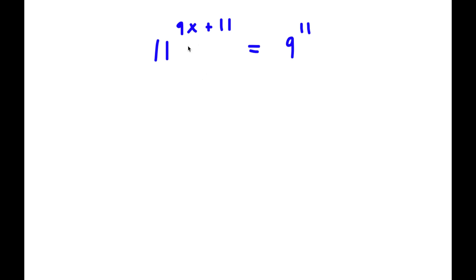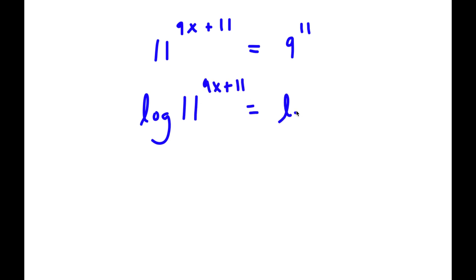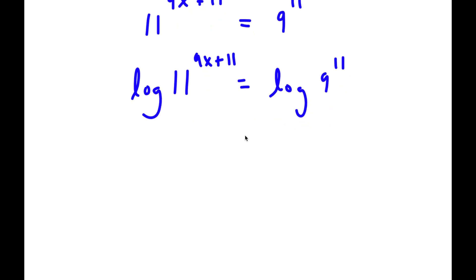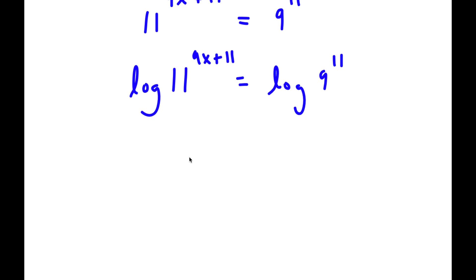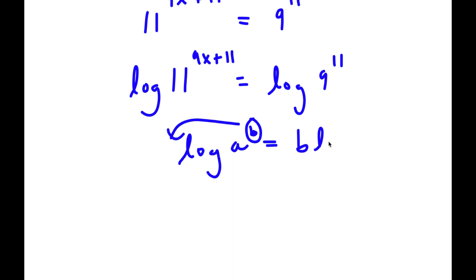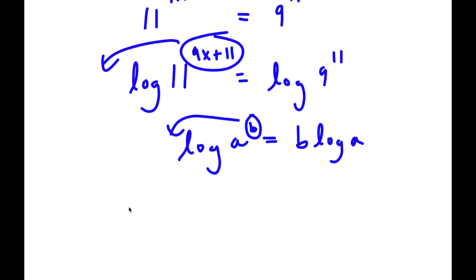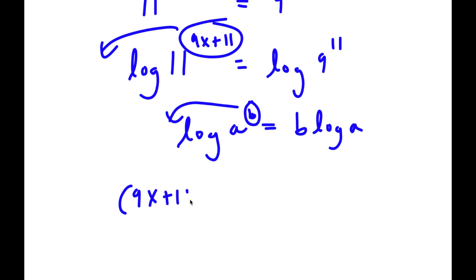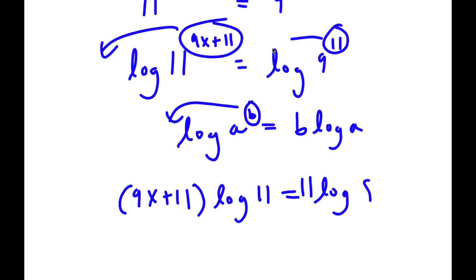In this problem, I have 11 to the power of 9x plus 11 is equal to 9 to the power of 11. The first thing I'm going to do is take the log on both sides. So now I have log of 11 to the power of 9x plus 11 equals log of 9 to the power of 11. Using the rule that log a to the power of b equals b times log a, I can move the exponents to the front. So I have 9x plus 11 times log 11 equals 11 times log 9.